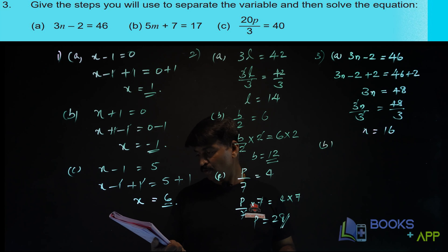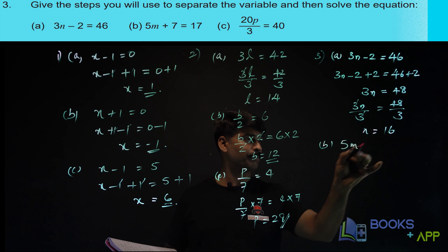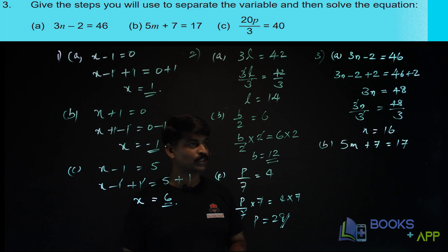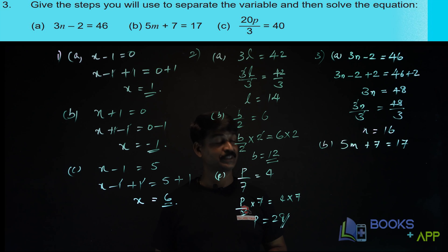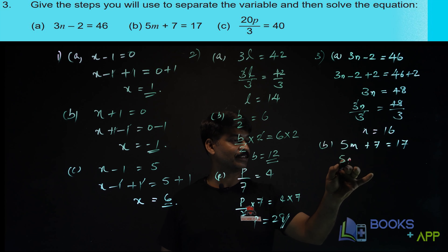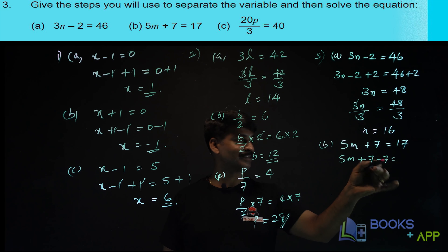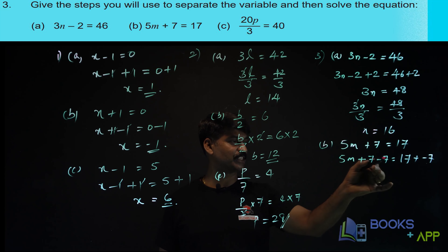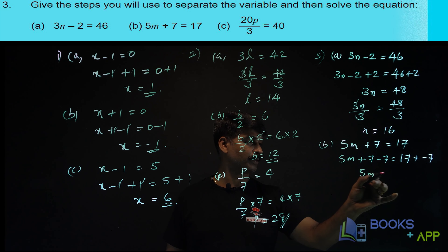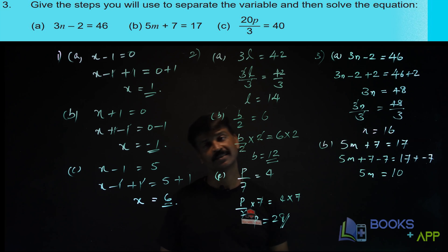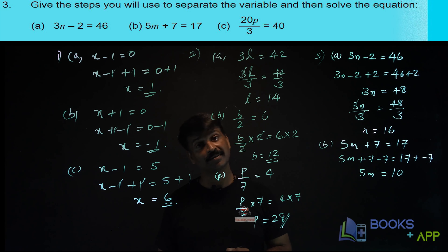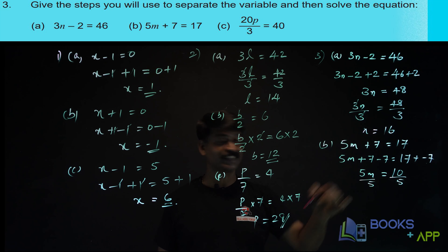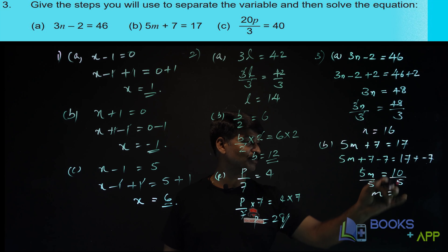Now let us solve the second one: 5m plus 7 is equal to 17. Children, tell me what is the first step? We have to remove plus 7, so we subtract 7 on both sides. So 7 and 7 get cancelled, giving 5m is equal to 17 minus 7, that is 10. Now we have to remove this 5, so divide both sides by 5. So 5 and 5 get cancelled. m is equal to 10 by 5, that is 2. I think it is clear.